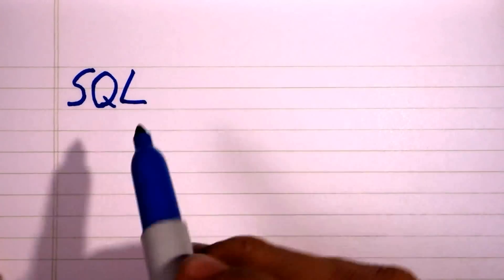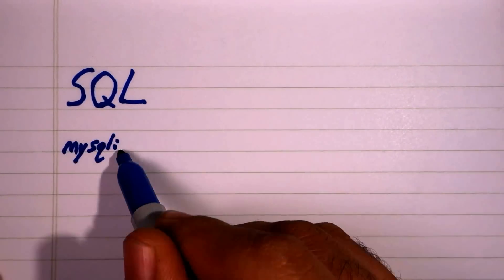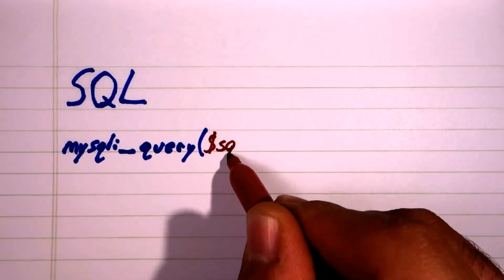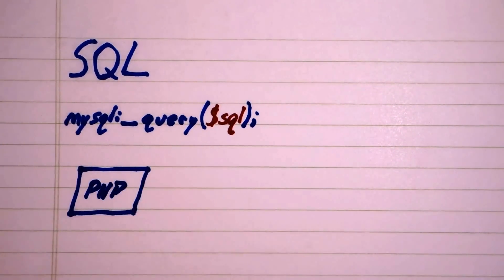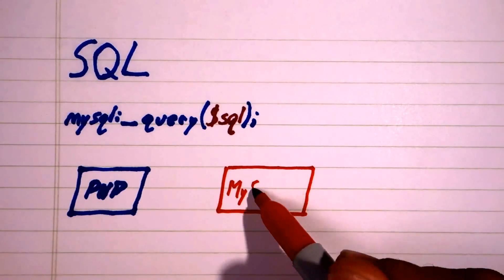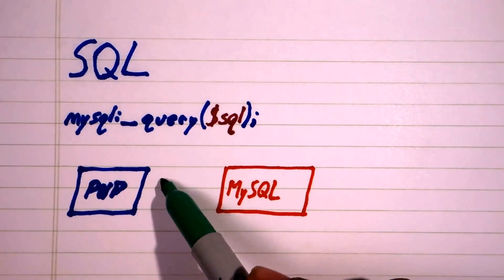To explain prepared statements, let's take a look at how database queries work. When we execute a query, the application sends it as a single string to the database server. The server then parses that string and executes the query against the dataset.